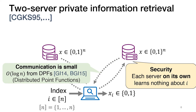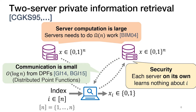Those protocols use a tool called distributed point functions. However, the downside of modern PIR protocols is that they are very expensive computationally. In particular, there is a lower bound showing that in PIR, in order for the servers to respond to the client's query, they need to do a linear amount of work.